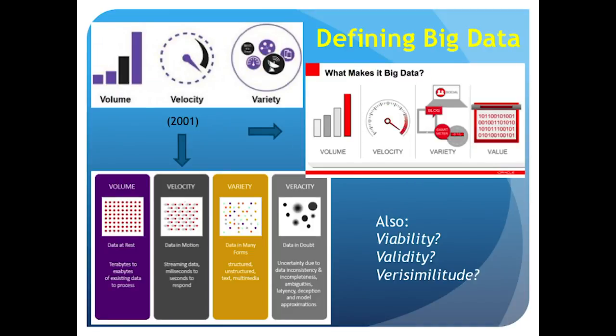How have people defined big data? In 2001, there was an original paper that started with three V's: volume, velocity, and variety. Big data is data that has huge volume, comes at you with high velocity, and presents a large variety of data types. The idea of adding more V's became popular — a clear sign of marketing hype — so you end up with vendors claiming only their software can solve your verisimilitude problems.